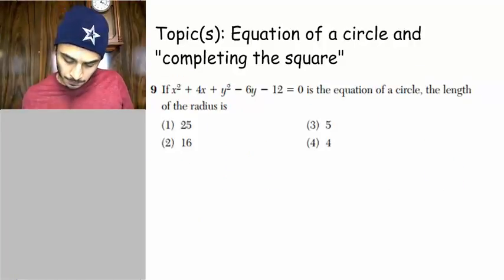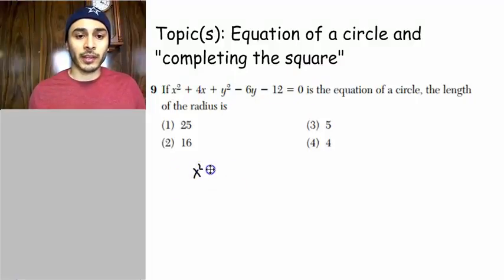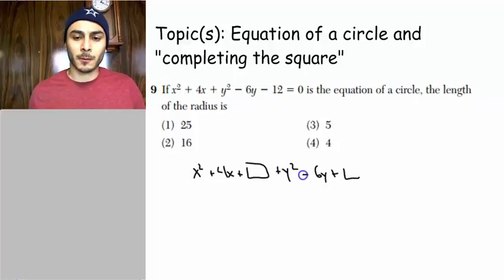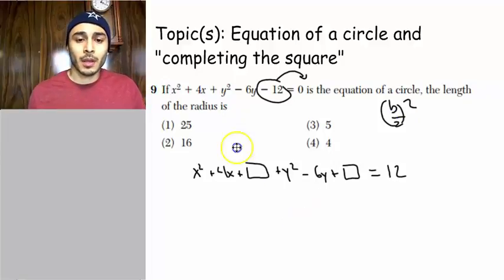Number 9. So we got to use completing the square if we want to find that radius they're asking for. So in order for us to complete the square, let's go ahead and set up our boxes. And this is what I mean by set up our boxes. And then, at the same time, we're going to have to move that constant to the other side. So we get 12 on the right side. What goes in the box is b over 2 squared. And then b is 4 for this box, and b is negative 6 for this box.